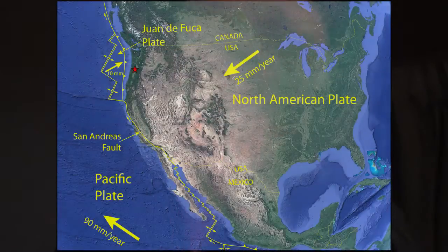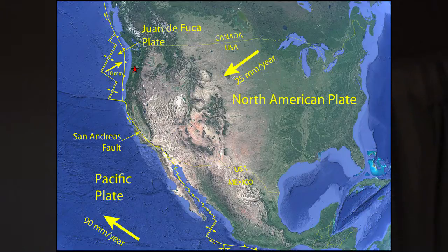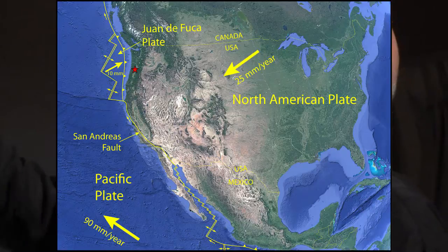I want to start by introducing you to our plate tectonic setting. Watch for the little red star — that's where you are sitting right now. We are on the North American plate which is moving gradually to the southwest. There's a plate boundary on the west coast of North America; for much of that margin it's a strike-slip boundary where the two plates move sideways relative to one another. That's how we interact with the Pacific plate — most of you have probably heard of the San Andreas Fault.